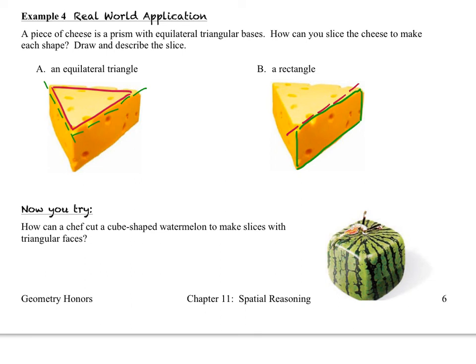Okay, you've got a now you try to work on and this one is a little bit tricky so do your best. It says how can a chef cut a watermelon cube to make slices with triangular faces and this is one of those very special watermelons that is created by growing actually in a box. So turn the video back on when you're ready to check your answer.